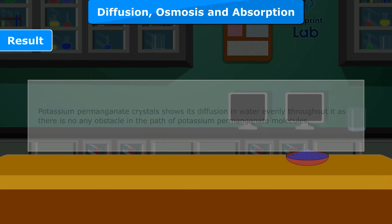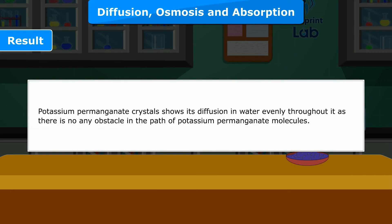Result: Potassium permanganate crystals show diffusion in water evenly throughout, as there is no obstacle in the path of potassium permanganate molecules.